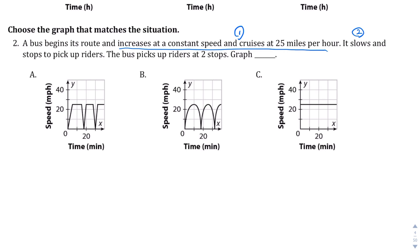And then it slows down and stops. It slows down and then it stops. So I'm going to label these two and three because there's, so far there's two parts to this question. Slowing down and stopping to pick up riders. And the bus picks up riders at two stops. So there's going to be, so this is going to happen at least twice. Or at least the stops are going to happen at least two or three times.